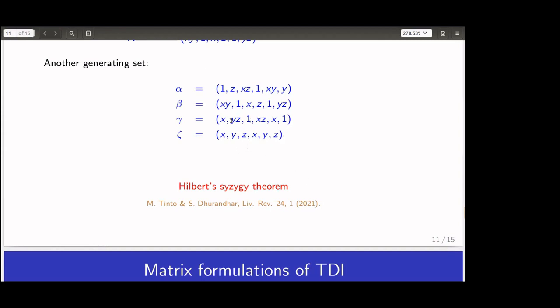You can keep forming modules of syzygies: finding relations between generators, forming the second module of syzygies, and so on. Hilbert's syzygy theorem says that at most you will need as many steps as there are variables in the polynomial ring — here three variables, so at most three steps. Hilbert preferred free modules — modules more like vector spaces with a basis.